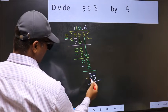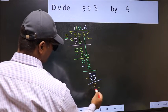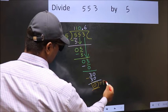Now you should subtract. 30 minus 30 is 0. So this is our remainder.